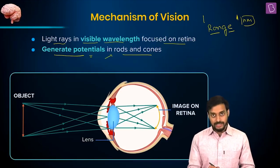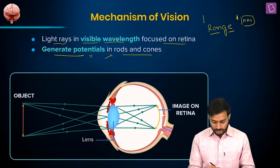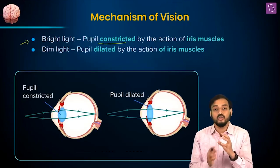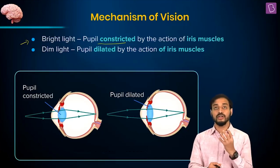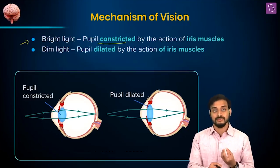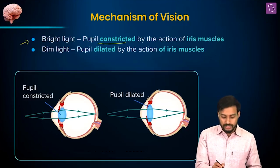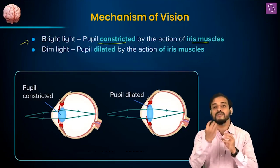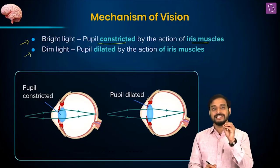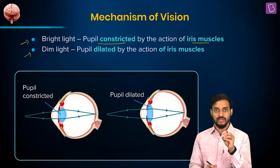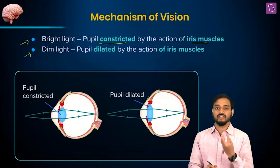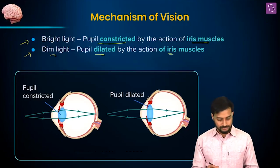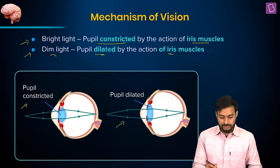The image forms on the retina, but we need the brain to perceive it — don't forget that. In bright light, the pupil will constrict because our eyes do not need that much light; too much can cause problems. In fact, it is always recommended you should not look at the sun directly. So bright light causes the pupil to constrict by the action of the iris muscles, becoming smaller to regulate how much light enters. In dim light, since the amount of light is low, the pupil dilates by the action of the iris muscles to allow more light rays in.